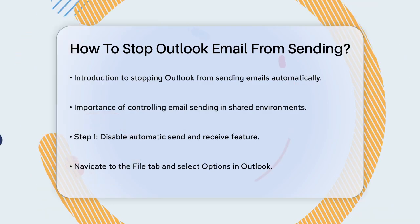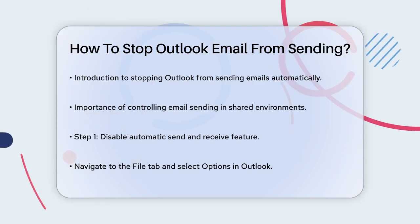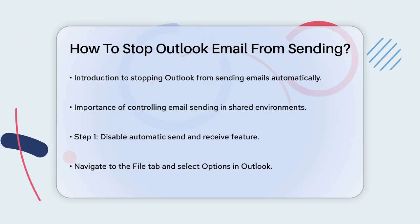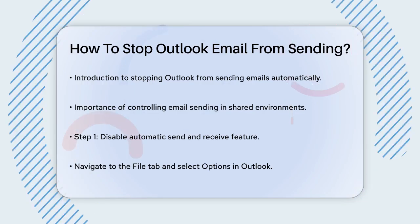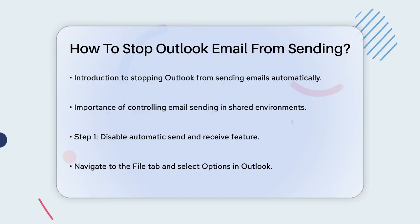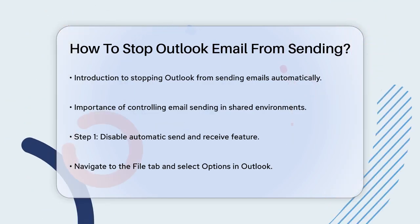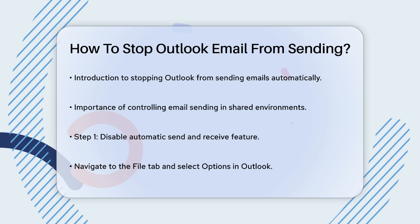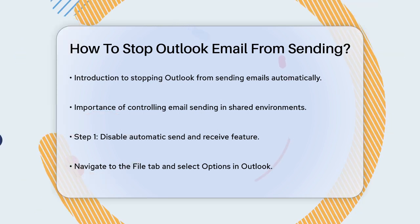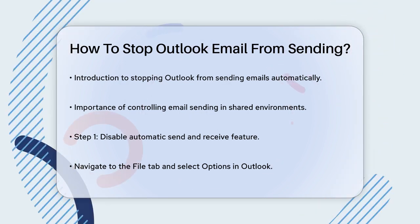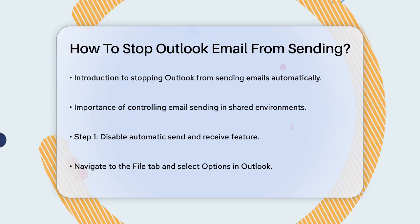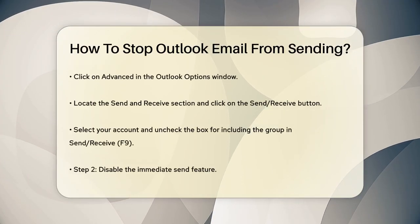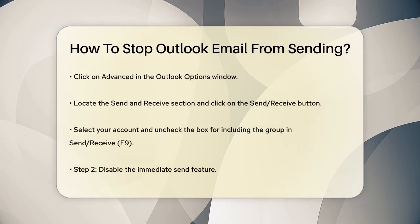Here's how you can do it. First, let's talk about disabling the automatic send and receive feature. To do this, open Outlook and go to the File tab, then select Options. In the Outlook Options window, click on Advanced in the left pane. Scroll down to the Send and Receive section and click on the Send Receive button.